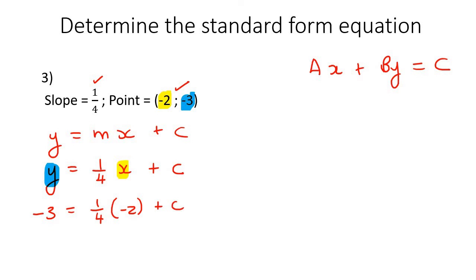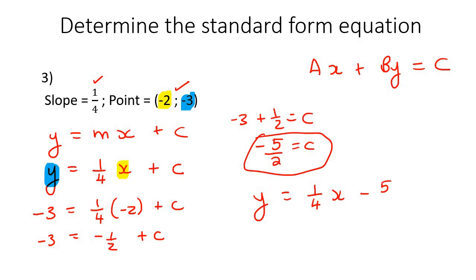So then what we end up with is minus 3 equals to—now, if you had to multiply these two on your calculator, you would get negative a half plus c. Now, you need to get the c by itself, so that would be c equals to negative 3 plus a half. So c would end up being negative 5 over 2. So now we can go write our equation in standard form—I mean slope-intercept form for now—like that.